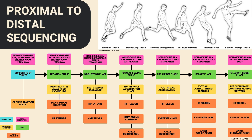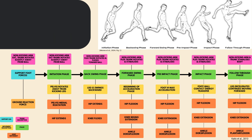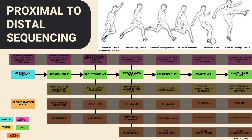Looking at proximal to distal sequencing, there are quite a few components. Starting at the initiation phase, we then have the backswing phase, going through the forward swing, then pre-impact, impact, and finally the follow-through.